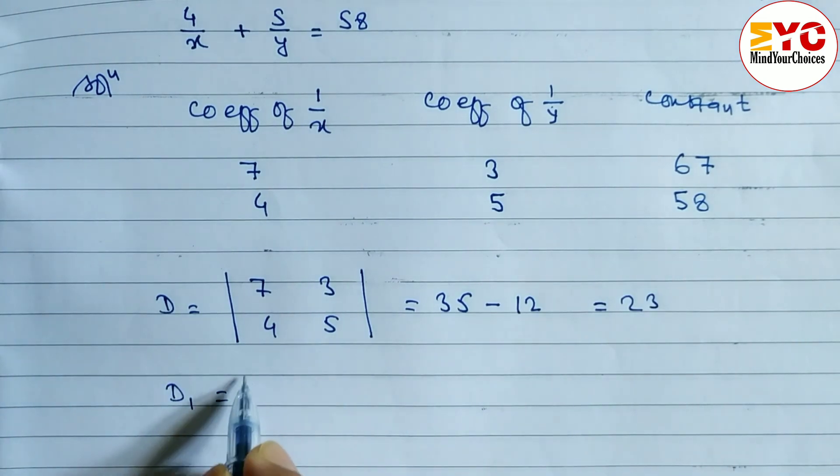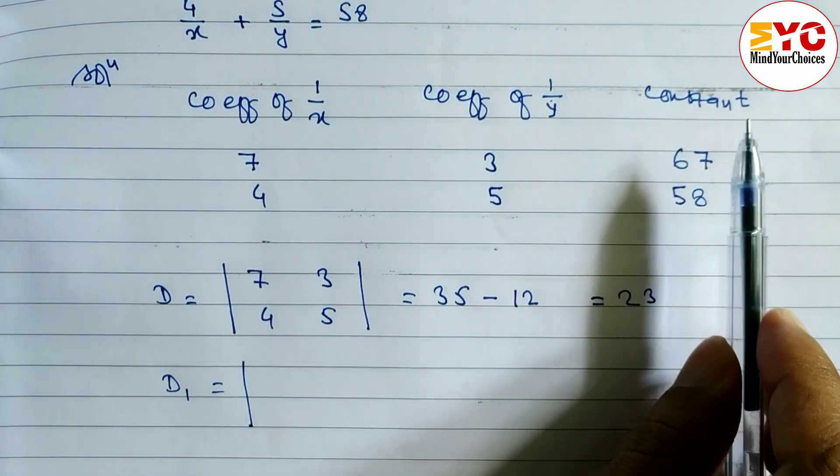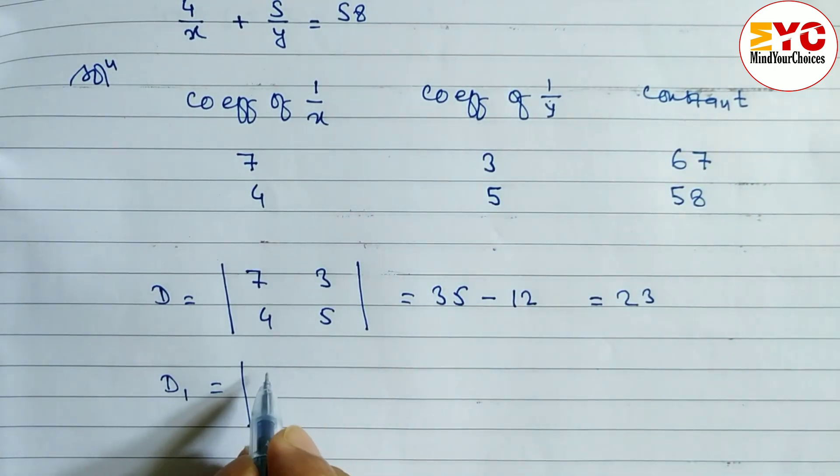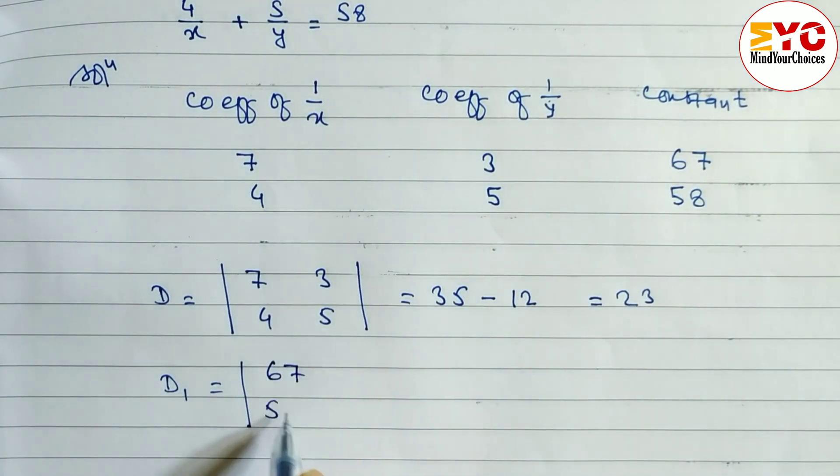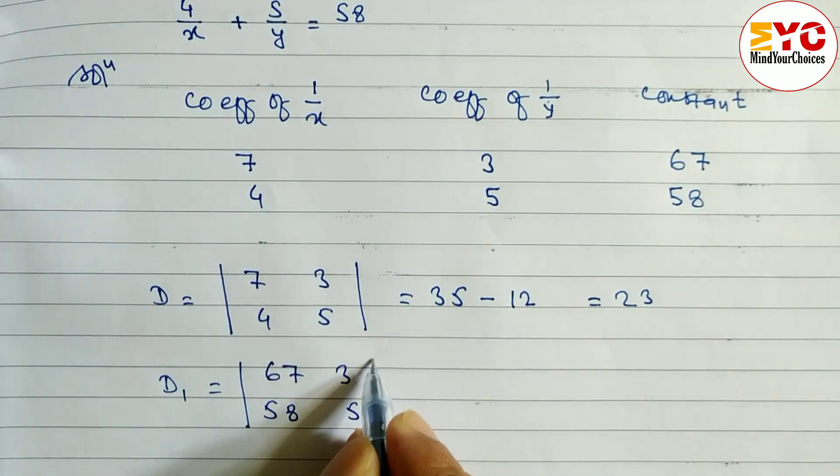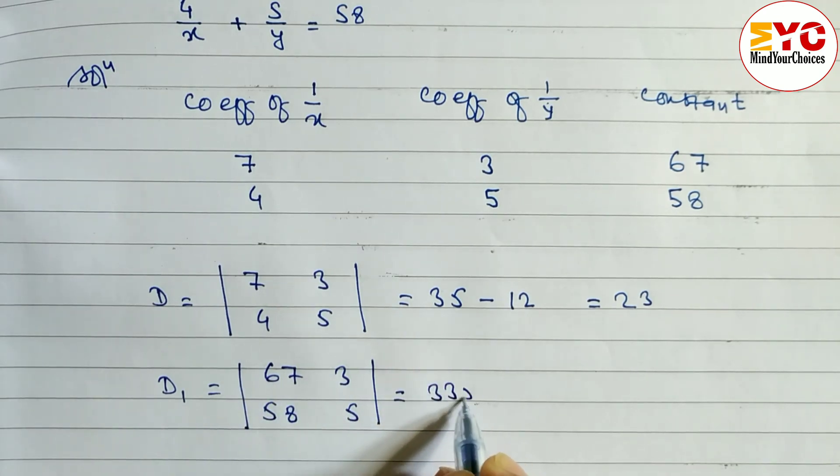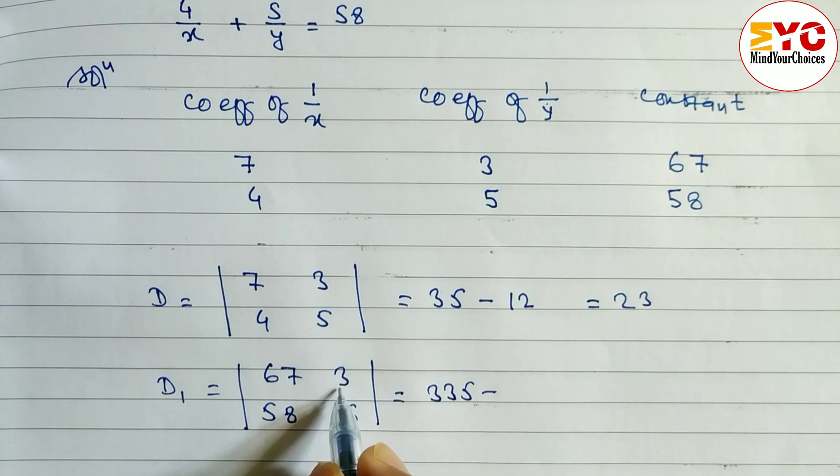35 minus 12 when you subtract we get here 23. Similarly we have to find out d1. To find out d1 what we have to take? We have to take constant number and coefficient of 1 by y. So constant number here 67 and here 58 and this side 3 and 5 we have to write down. Let's multiply this one.